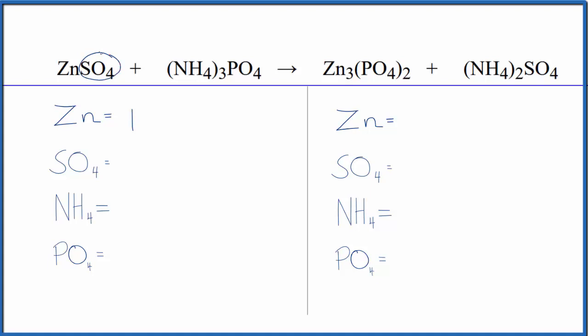Here's the trick: we have this SO4, it's called the sulfate ion, it's a polyatomic ion. We have it here and same thing, it stays together in the reaction. So we have just one sulfate ion in the reactants.